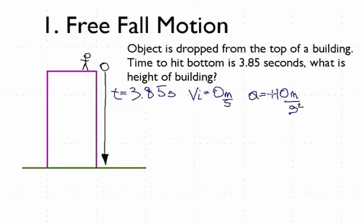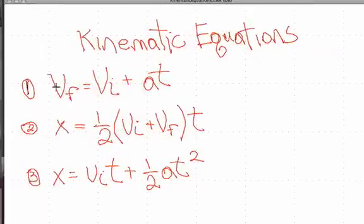Because it's falling down and we consider down in the y direction negative, we're going to put negative 10 meters per second squared. So now what equation are we going to use? We know the time, we know the initial velocity, and we know the acceleration, and we want to know the distance. The first equation doesn't have distance, so we can't use that. The second one requires the final velocity, which we don't have. But the third one — we know the initial, we know the time, we know the acceleration — so we can use equation 3.